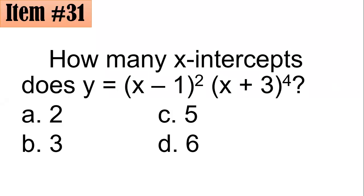Let's move on to item number 31. How many x-intercepts does the graph of y equals (x minus 1) squared times (x plus 1)(x plus 3) to the fourth power have? Is it two, three, five, or six? We can see that the degrees here are two and four.